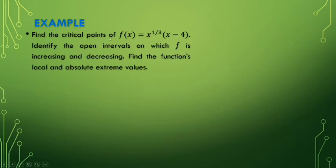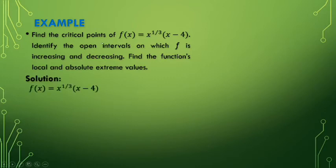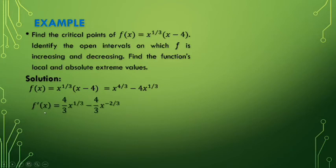Example: find the critical points of f(x) = x^(1/3) · (x - 4), identify the open intervals on which f is increasing and decreasing, and find the function's local and absolute extreme values. As a solution, first we find the critical points. We can distribute to get a simpler function: f(x) = x^(4/3) - 4x^(1/3). Then f'(x) can be found using the power rule.